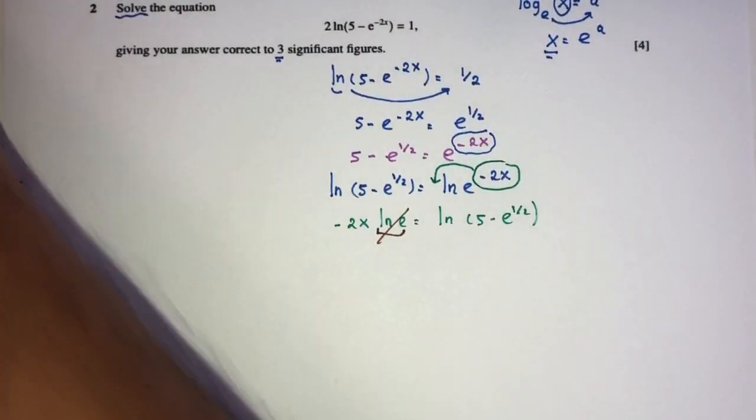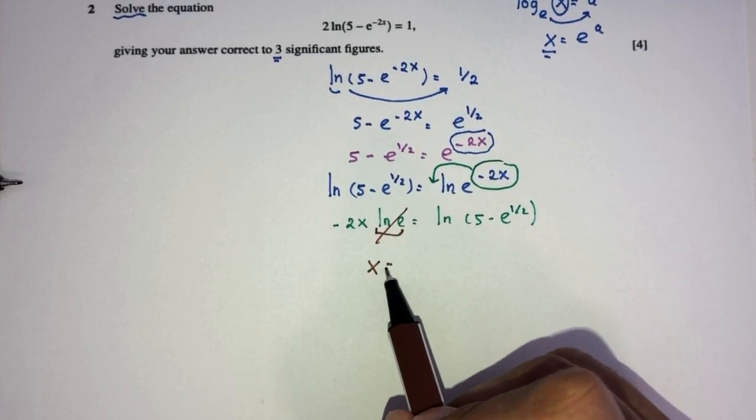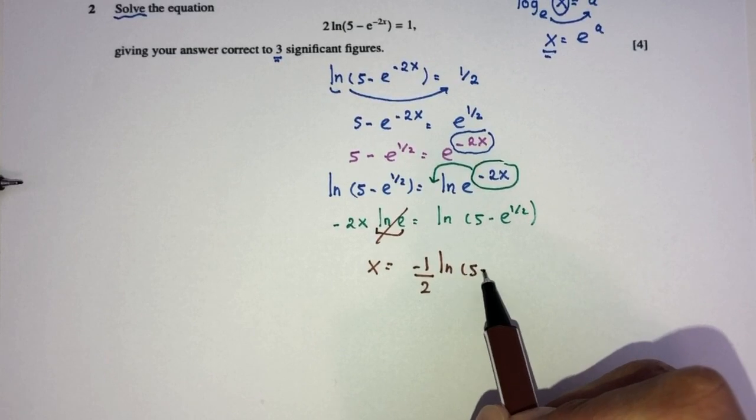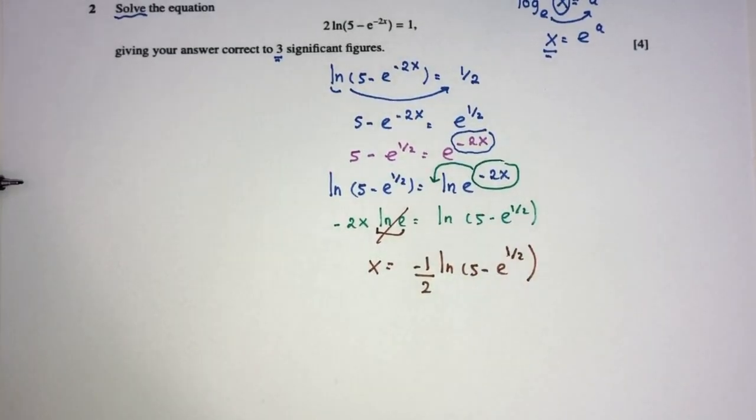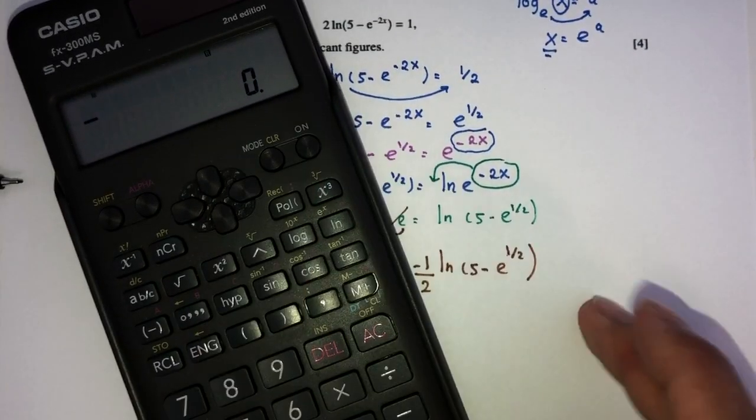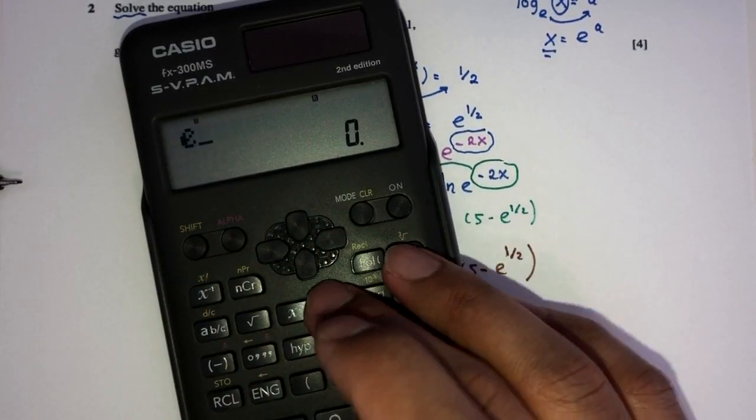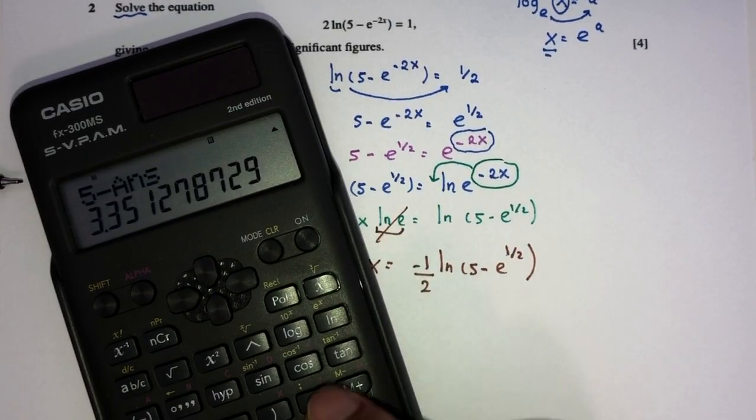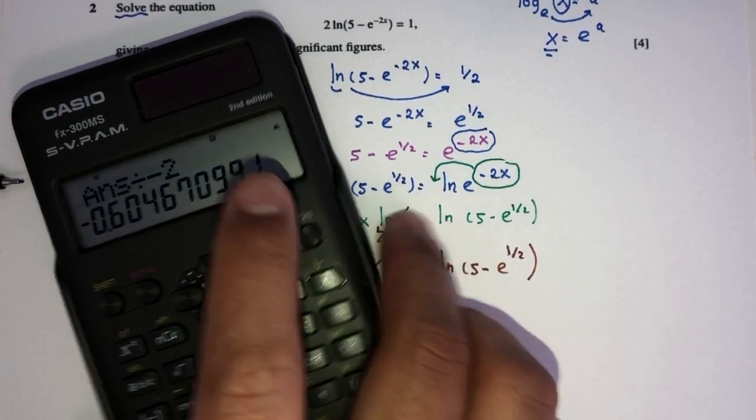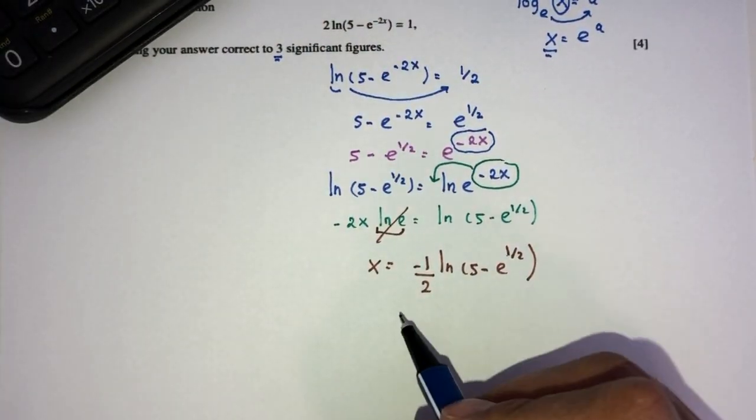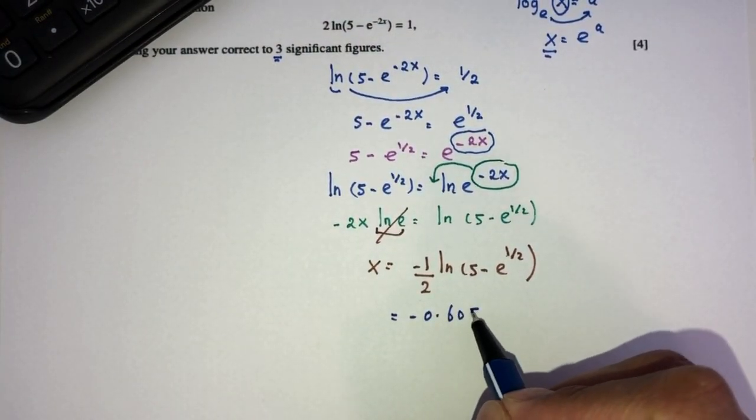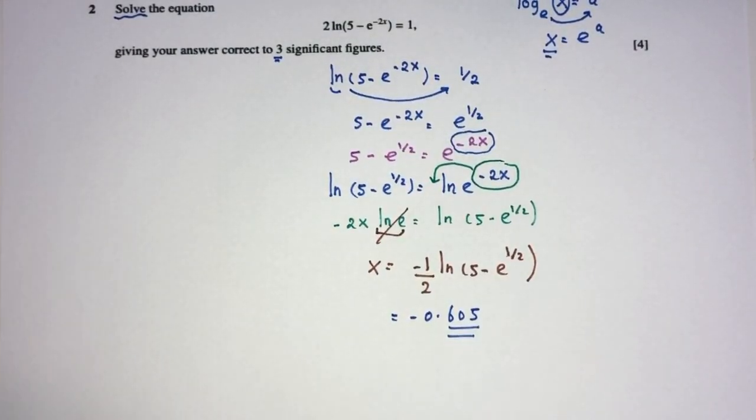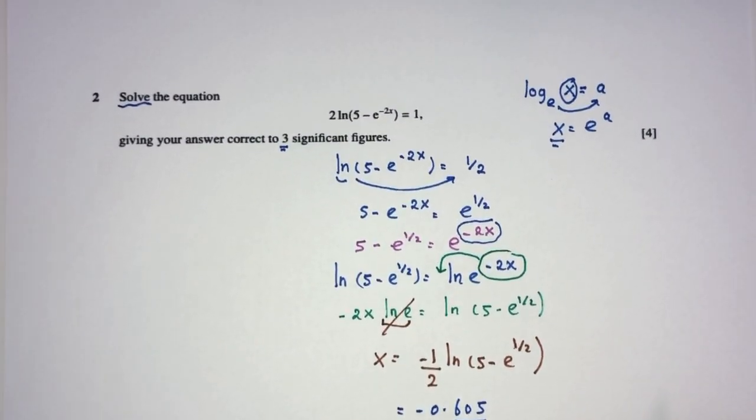Now, what's next? So, we have -2x. So, x will be divided by minus 2. That will be your value of x. Now, we have to evaluate this. So, 5. So, here we have e^(1/2). 5 minus answer. Okay. Then, have ln of the answer divided by minus 2. That should be minus 0.605, correct to 3 significant figures. This is my answer for question number 2. We have to know how to use the laws of logs in this question.